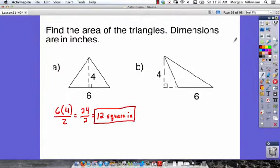Problem B. Our base is 6 and our height is 4, because height always has to be straight up and down. Now notice that our triangle is only here.